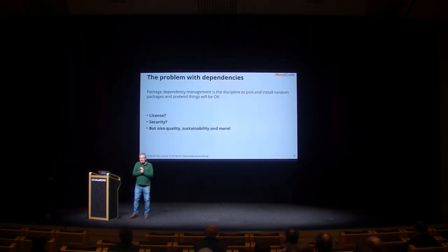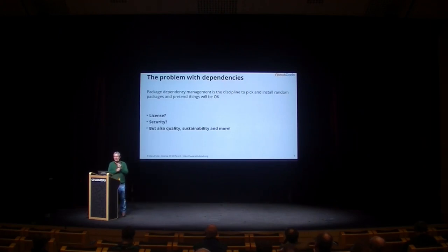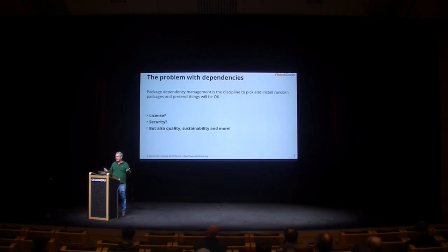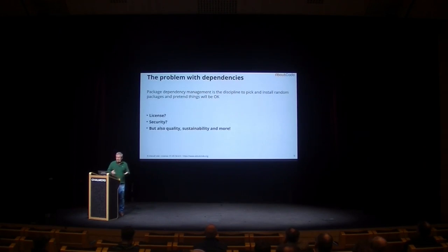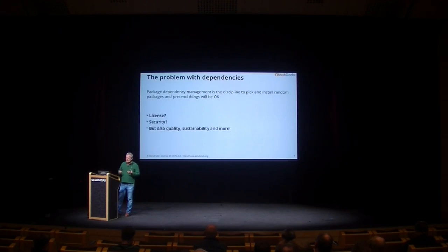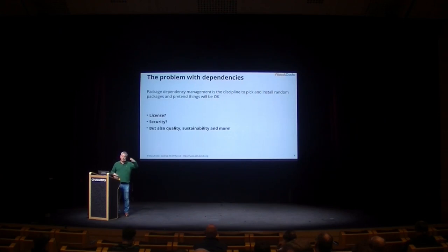So the problem is dependency. I think we've built a wonderful food gun where we can now super easily provision and install random software, and pretend that we have some control on this and that everything is going to be okay. As a result, we have potentially licensing issues, security issues, and many more. We can provision 400 npm packages with 'npm install foo'.